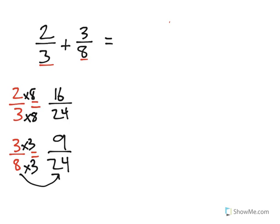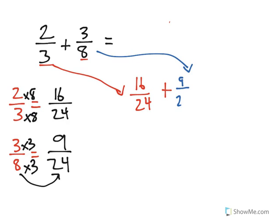So 2/3 was equal to 16/24. Instead of 2/3, I'm going to have 16/24. And 3/8 was the same as 9/24. I'll add that in.